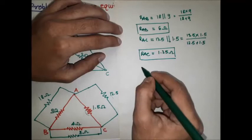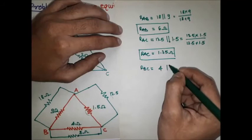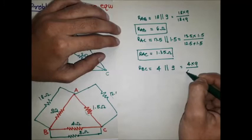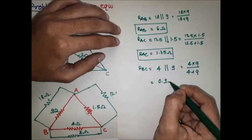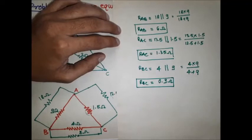Now finding RBC: 4 ohm and 9 ohm are in parallel. RBC = (4 × 9) / (4 + 9) = 2.76 ≈ 0.9 ohm. So RBC = 0.9 ohm.